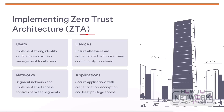Implementing Zero Trust Architecture, or ZTA, is a security model that assumes no user or device is trusted by default, even if they are inside the network perimeter. The key principles of ZTA are to verify users, devices, networks, and applications before granting access. For users, implement strong identity verification and access management controls. For devices, ensure they are authenticated, authorized, and continuously monitored. Network segmentation and strict access controls between segments are critical to limit the spread of threats. Applications must be secured with authentication, encryption, and least-privileged access, or LPA, to protect sensitive data. Implementing ZTA principles helps organizations reduce the attack surface and better protect against modern cybersecurity threats.